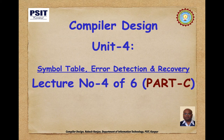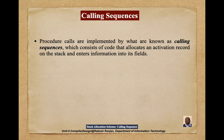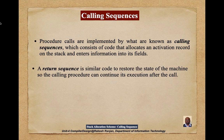Lecture number four. We will discuss about calling sequence and access links. Procedure calls are implemented by what are known as calling sequences, which consist of code that allocates an activation record on a stack and enters information into its fields. A return sequence is similar code to restore the state of the machine so the calling procedure can continue its execution after a call.